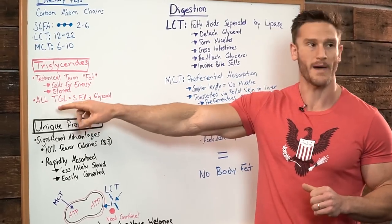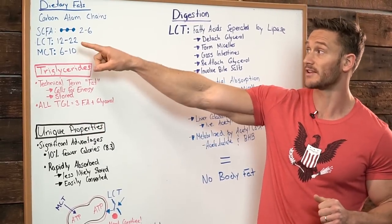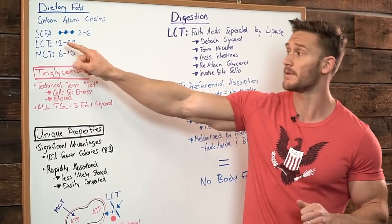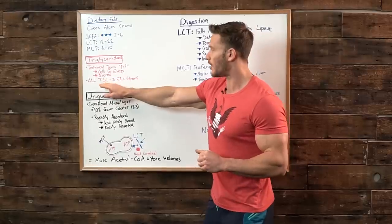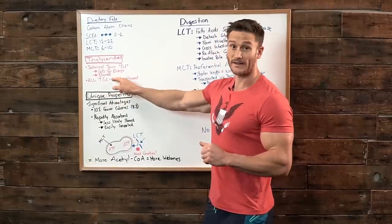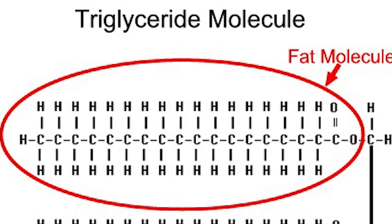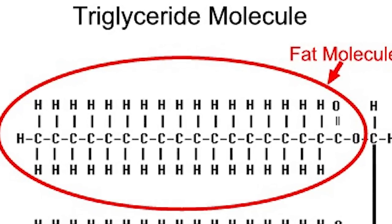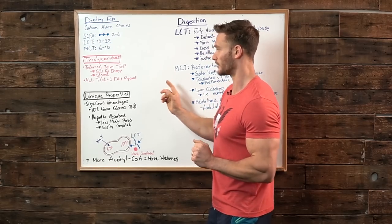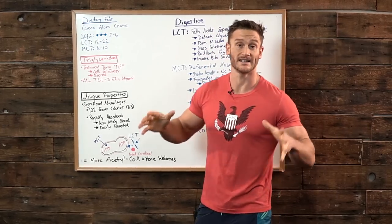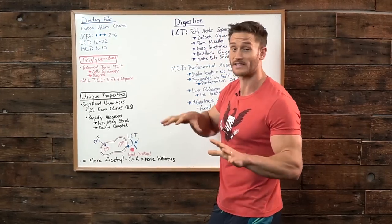But what we have to remember is that no matter what, whether it's a short-chain triglyceride, a long-chain triglyceride, or a medium-chain triglyceride, all triglycerides are three fatty acids bound to a glycerol backbone. Triglyceride. Put it together, that's all it is. Three fatty acids and a glycerol molecule. So now let's take a look at MCTs now that you have a basic understanding of this.